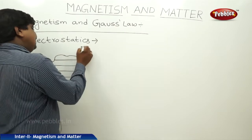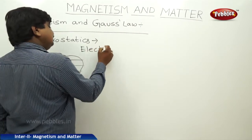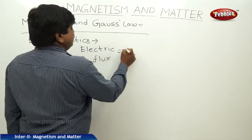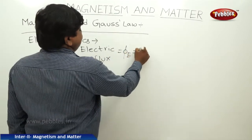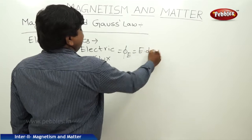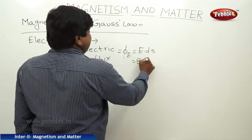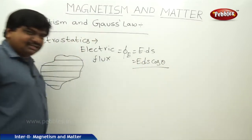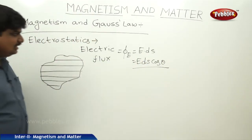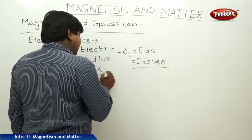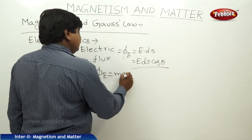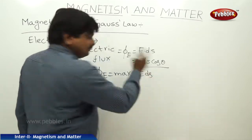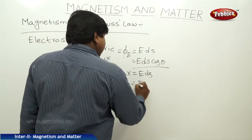The number of field lines passing through the unit surface area is called the electric flux. The electric flux phi E equals E dot dS, which gives E dS cos theta. When the electric field and the surface are parallel to each other, phi E is maximum and its value is E times A for the total surface.